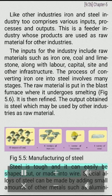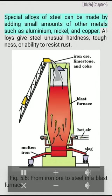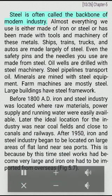Steel is tough and can easily be shaped, cut, or made into wire. Special alloys of steel can be made by adding small amounts of other metals such as aluminium, nickel, and copper. Alloys give steel unusual hardness, toughness, or ability to resist rust. Steel is often called the backbone of modern industry. Almost everything we use is either made of iron or steel, or has been made with tools and machinery of these metals.